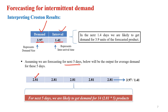So 3.97 divided by 1.41 gives us 2.81. Since the forecast horizon is five days, the demand for the next five days is 2.81 per day. If we multiply 2.81 by 5, the total demand for the next five days would be approximately 14 units. I hope you understand how to get the forecasted value with the Croston method for intermittent demand and how to interpret it.